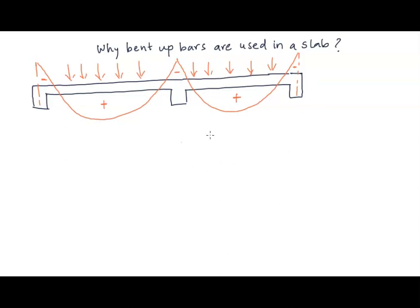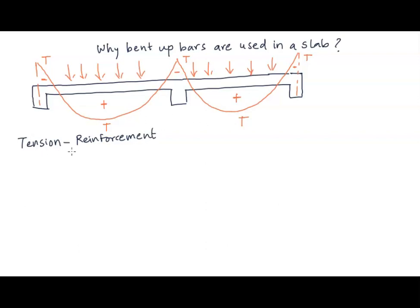Now what does this have to do with the bent up bars? An important principle is that in case of negative bending moment, there is tension at the top, and in case of positive bending moment, there is tension at the bottom. The first most important principle we always use in RCC is that wherever there is tension, we provide reinforcement.